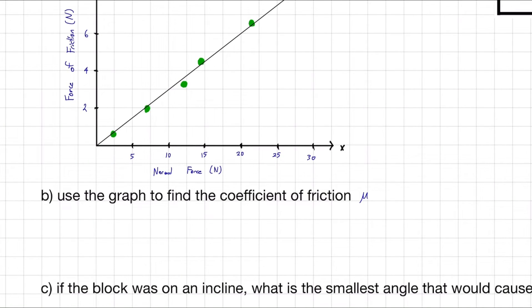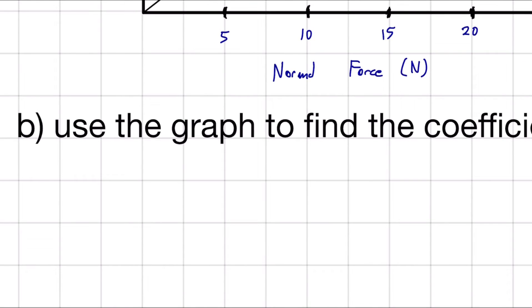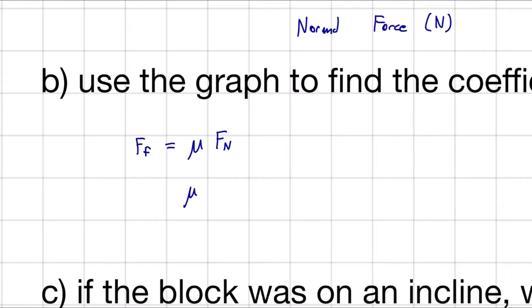Part B is going to ask us to use the graph to find the coefficient of friction, or mu. What do we know about mu? We know that there's a relationship between the force of friction because it equals mu times F_n. That is our formula to find the force of friction. We can rearrange this equation to isolate mu by bringing the normal force to the other side of the equation. Instead of being a multiplication on this side, there'll be a division. So mu equals force of friction over F_n.